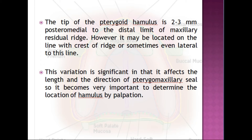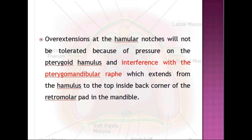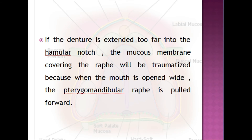The tip of the pterygoid hamulus is two to three mm posterior and medial to the distal limit of the maxillary residual ridge, but it may sometimes be on the line with the crest of the ridge or even lateral to it. This variation is significant as it affects the length and direction of the pterygomaxillary seal. Over-extensions at the hamular notches are not tolerated because of pressure on the pterygoid hamulus and interference with the pterygomandibular raphe, which extends from the hamulus to the top inside back corner of the retromolar pad. If the denture is extended too far, the mucous membrane covering the raphe will be traumatized when the mouth is opened wide.